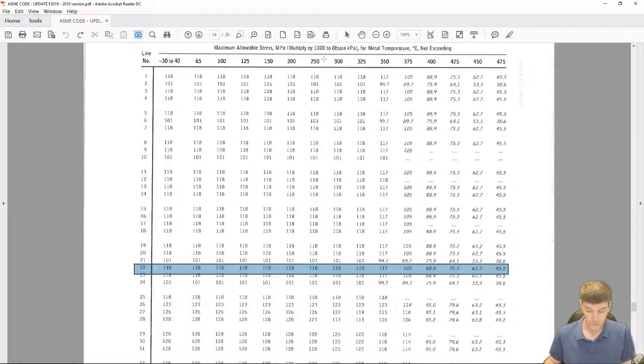If we keep going down then, line 22, we can scroll across and find at our temperature - and I believe our temperature was 280 degrees. Now we run into a problem. 280 isn't listed on our table. So what we would want to do is always round up to the next highest temperature. So in this case, 300 degrees, and we'll find our value. Line 22 and 300 degrees gives us a stress value of 118.